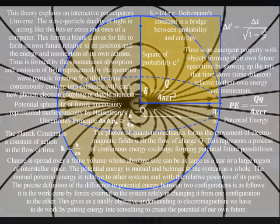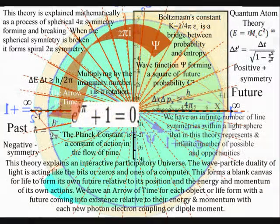We have this potential because there are an infinite number of line symmetries within a sphere that in this theory represent an infinite number of potential future timelines that form an infinity of possibilities.